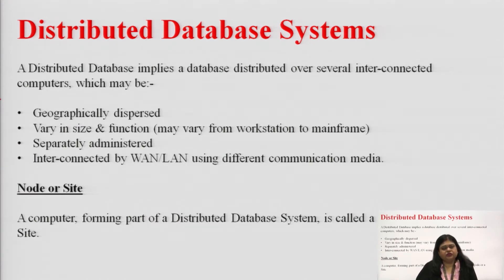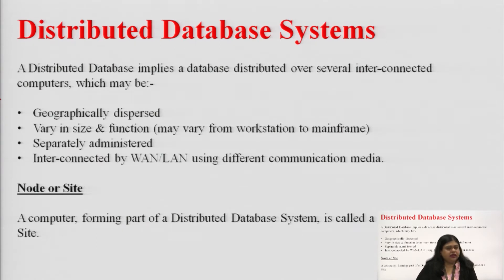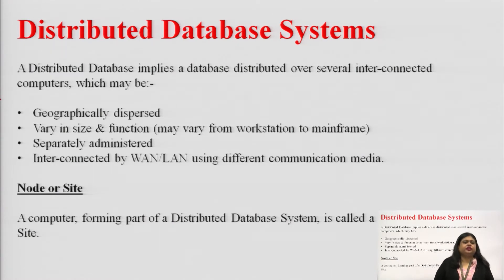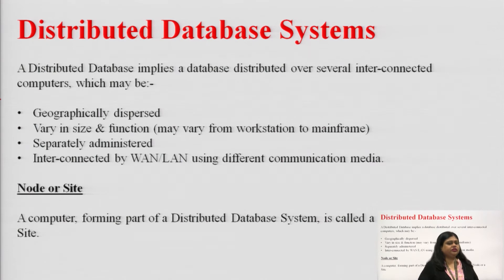Before we get into the details of distributed database systems, we need to understand what is a node or a site. A node or a site can be a computer forming a part of the distributed database system, and it can be called a node or a site interchangeably. It can be anything — a computer, a mainframe machine, a workstation, or a server machine. Any one of these components will be called a site or a node. This is the basic concept of distributed database systems.